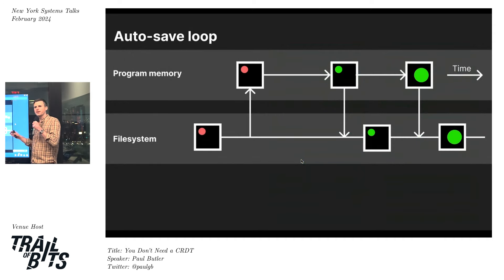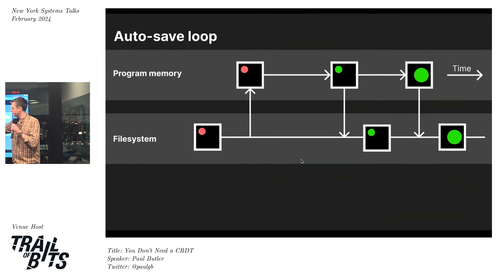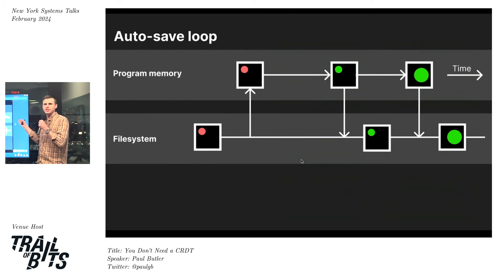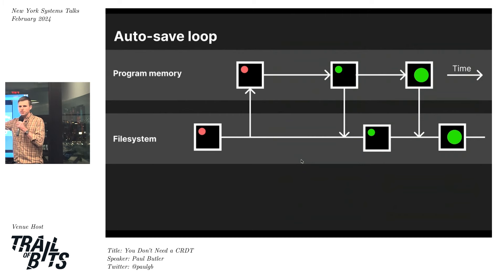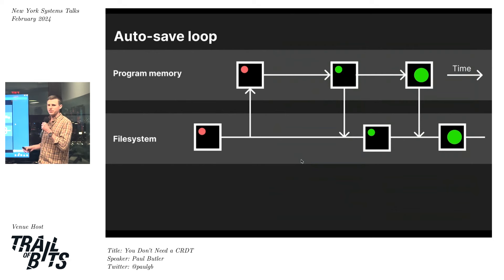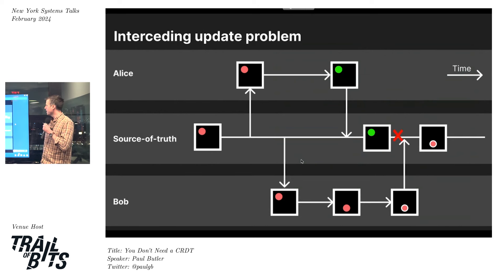I want to get into the technical bits of why this is different. An application like a vector editor can have an autosave loop: load the document into program memory, then every 10 seconds dump it back to disk. Once loaded, this is actually one way - it never has to reload state from disk. This is a simple example where the program has a lock on that file.